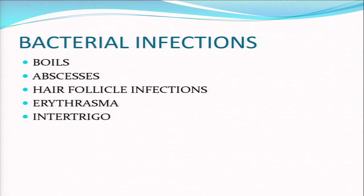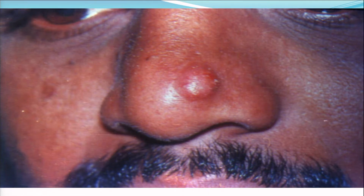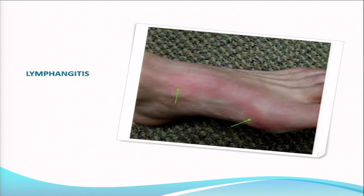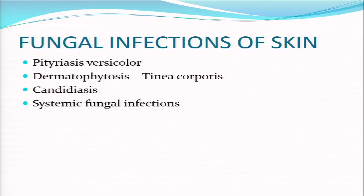Boils, abscesses, hair follicle infections, erythrasma, and intertrigo are most commonly seen in diabetics. Let me quickly go through some pictures. Furuncles and carbuncles caused by Staphylococcus aureus - we hardly see carbuncles since the advent of insulin. Lymphangitis and cellulitis are very common; these patients go to the ICU for 10 to 14 days on high-dose antibiotics with insulin management. Moving from bacteria to fungal infections: tinea versicolor, dermatophytosis, candidiasis, and systemic fungal infections.